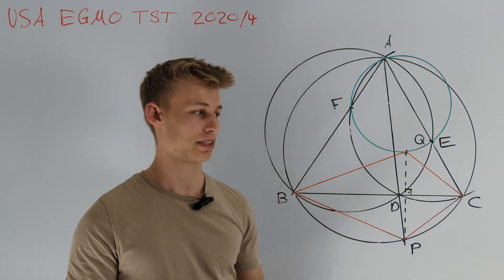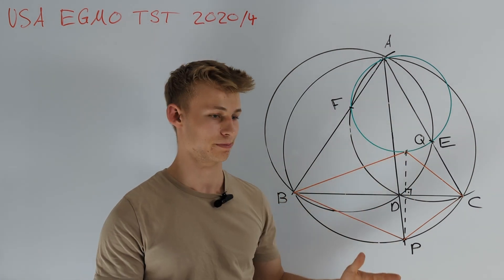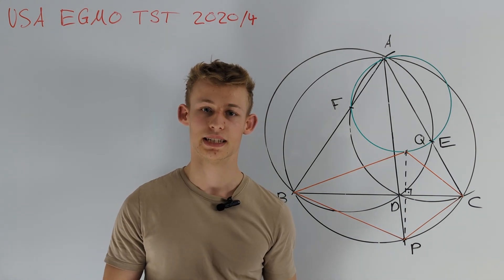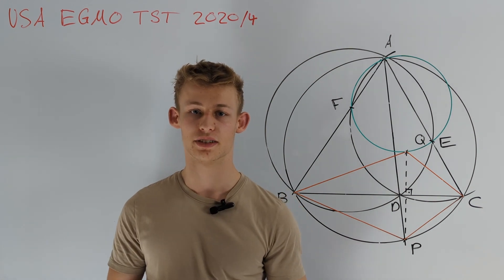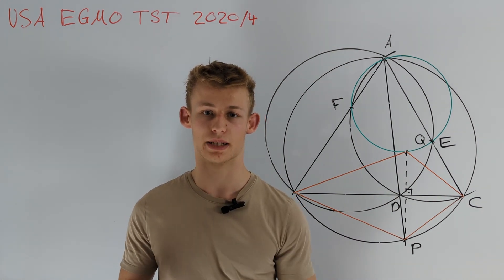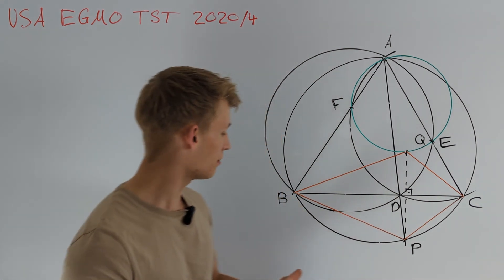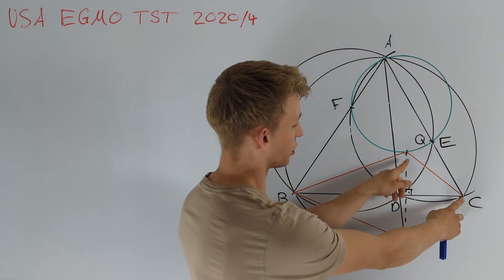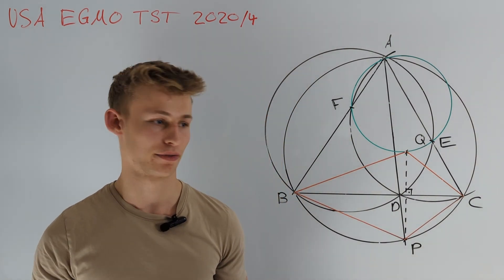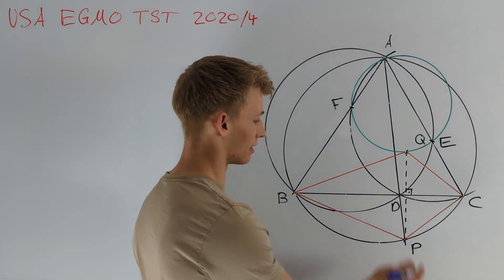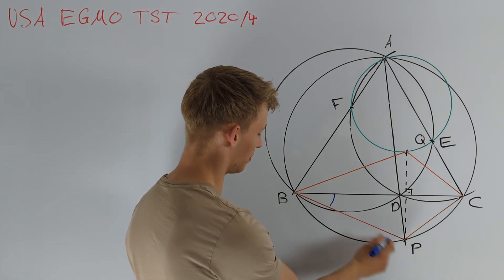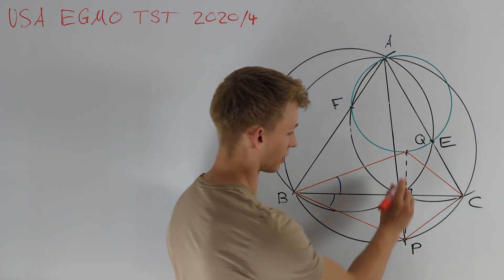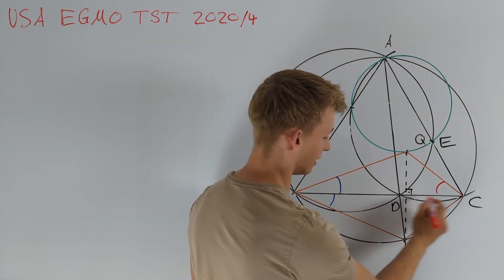The main difficulty in this problem is to deal with this reflection point Q. Every time when we reflect points about lines there are two possibilities. The first possibility is to use the fact that we have segments with the same length — for example BP equals BQ and PC equals QC. The second possibility is to deal with angles of equal size. For instance, the angle PDB equals angle DBQ, and the angle QCD equals angle DCP.